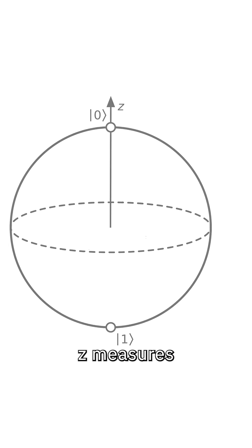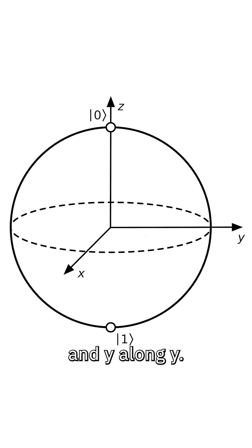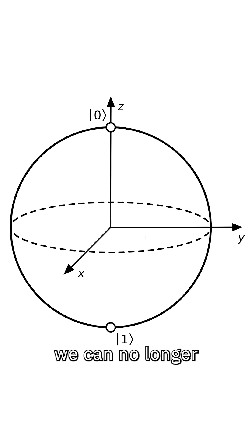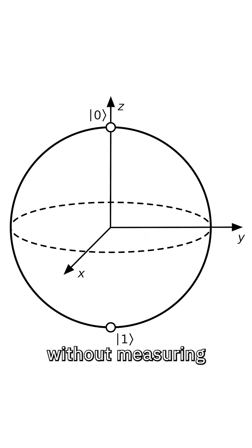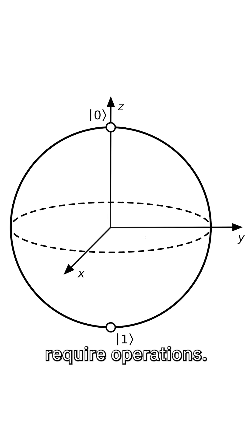You might expect z measures along the z-axis, x along x, and y along y. We're talking about observables because with a quantum system, we can no longer just know things about the system without measuring them. And each observable has a corresponding operation, because measurements require operations.